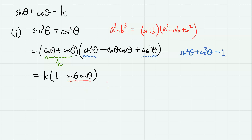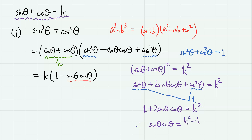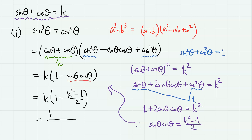So we have k times 1 minus sine theta cosine theta, and we require the expression for sine theta cosine theta. From the condition sine theta plus cosine theta equals k, squaring both sides gives sine square theta plus cosine square theta plus 2 sine theta cosine theta equals k square. Since sine square theta plus cosine square theta is 1, we get sine theta cosine theta equals k square minus 1 over 2. Using this, we have k times 1 minus (k square minus 1) over 2, which gives k times (3 minus k square) over 2. This is the answer.